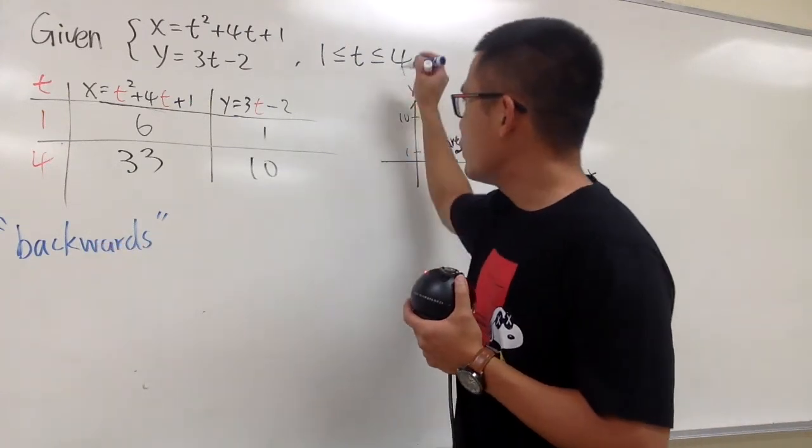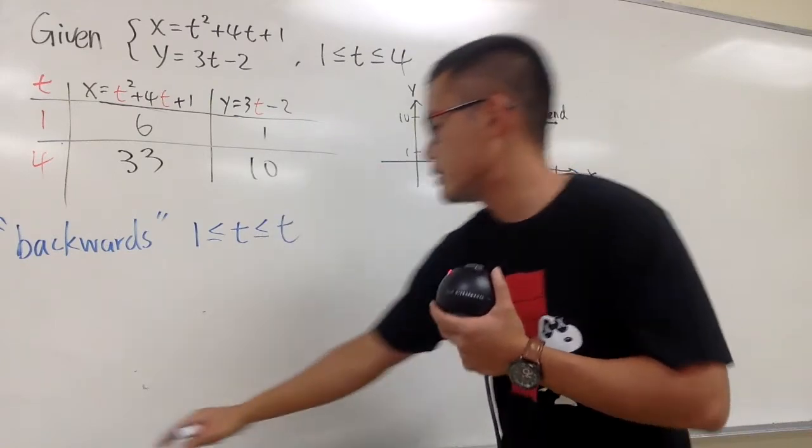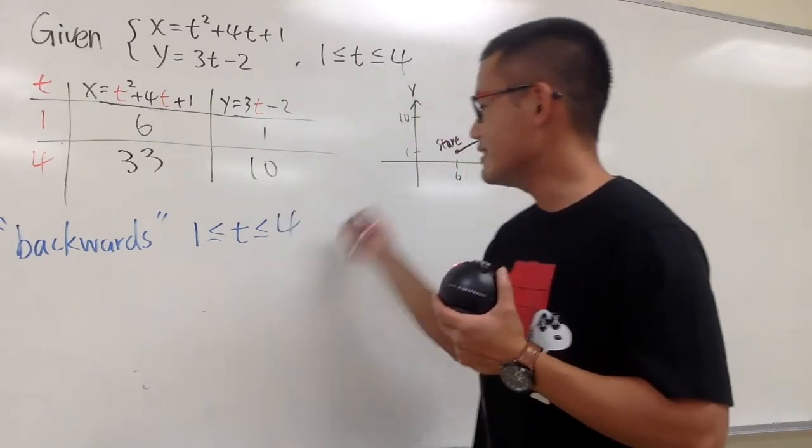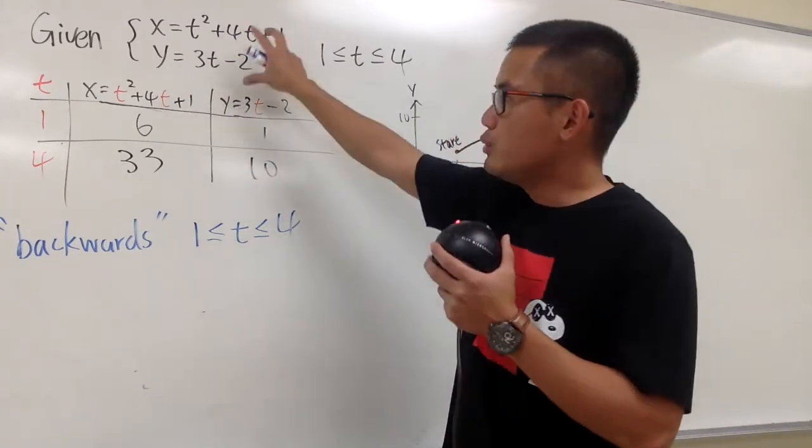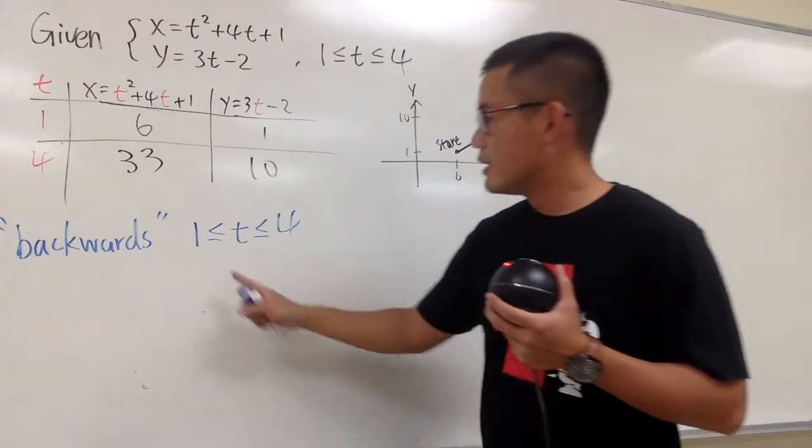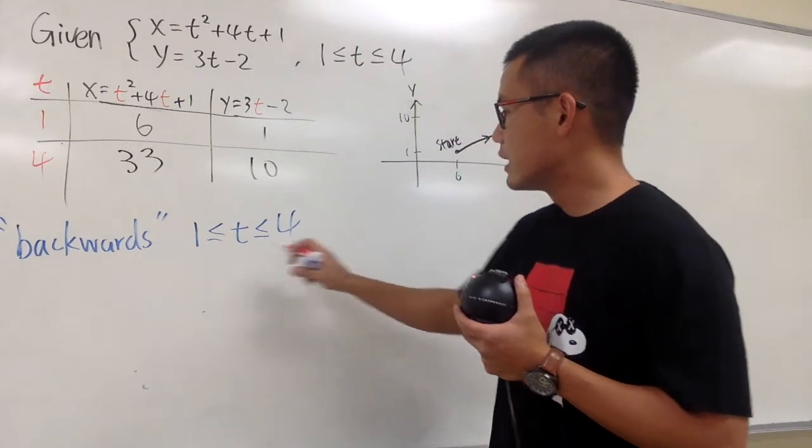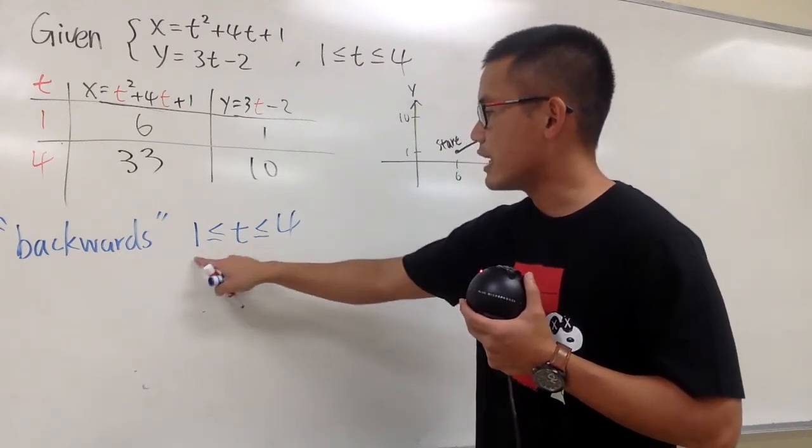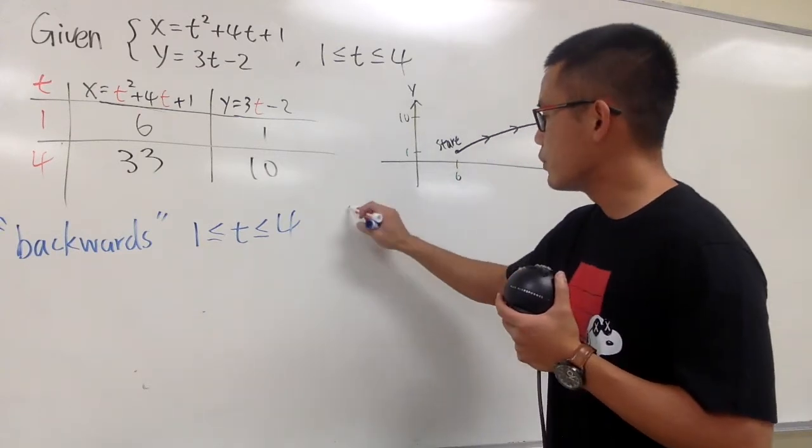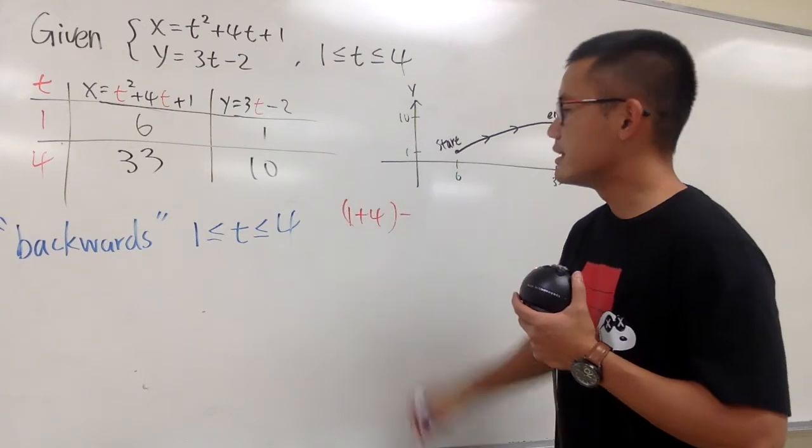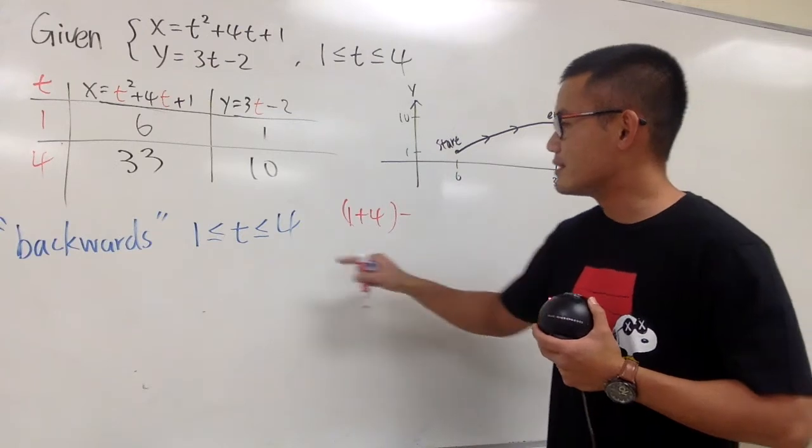So for backwards, I will still have to keep t in between 1 and 4. t in between 1 and 4, not t and t. Like this. And this is how you are going to do it. We still have these two original equations. You have to utilize that. But first of all, look at the time interval. It is from 1 to 4. What you have to do first is you are going to add the ending values together, the end and the start. So you are going to add 1 and 4 together, so let me just put 1 plus 4 like this, and then minus, this minus is going to help you to turn the time backwards, minus t.